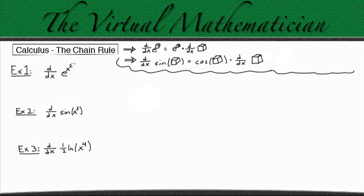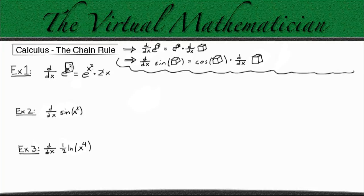Let's consider this example right here. We need to take the derivative of e to the x squared. We know the derivative of the exponential function is always itself, so we're going to get e to the x squared. And then we have to multiply that by the derivative of whatever's inside the box, which in this case is going to be 2x. So that's how we take this derivative using the chain rule.